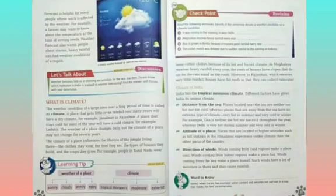The climate of a place influences the lifestyle of the people living there — the clothes they wear, the food they eat, the types of houses they build, and the crops they grow all depend on the type of climate a place has. For example, people in Tamil Nadu wear loose cotton clothes because it is very hot and humid there. In Meghalaya, which receives heavy rainfall every year, the roofs of houses are all slanting so that rainwater does not stand. In Rajasthan, which receives very little rainfall, houses have flat roofs so they can collect water.